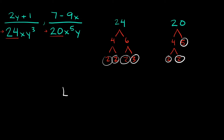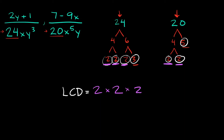Finding the LCD between those two, we multiply it out. From 24 we have a 2, a 2, a 2, and a 3. From 20 we have a 2, a 2, and a 5. Remember, anything that's similar on both sides you only write down once. So the first 2 from each side we write once, the second 2 from each side we write once. Then the extra 2, the 3, and the 5 each go down by themselves since they had no pair.